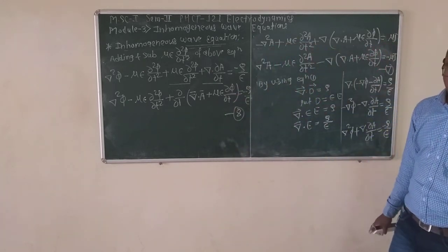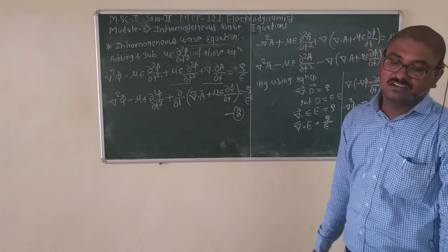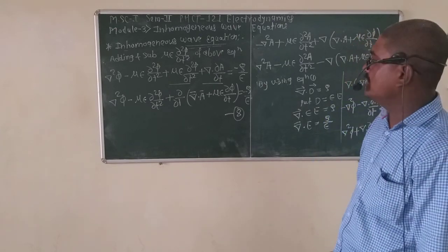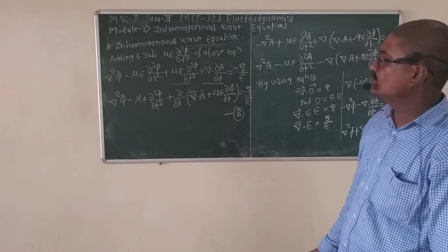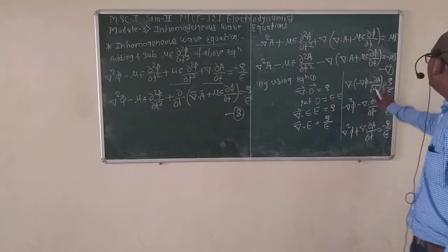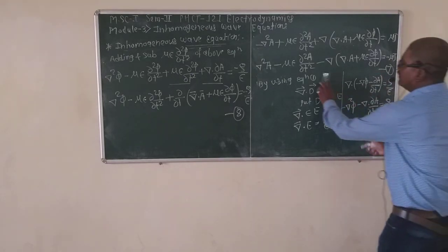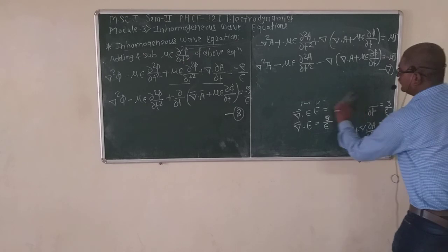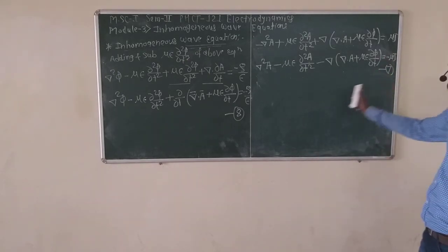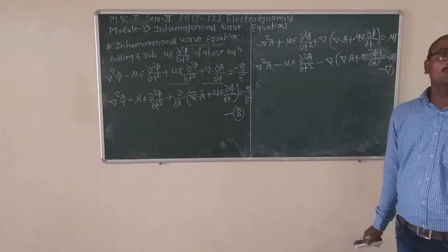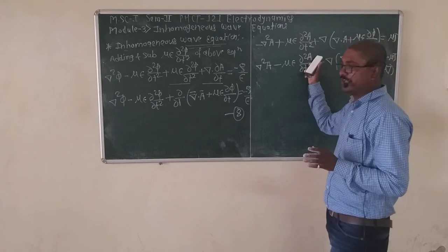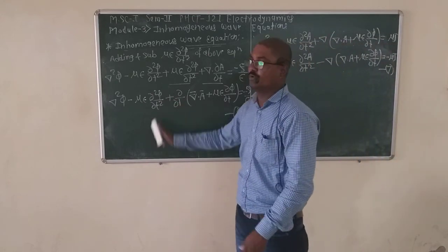After adding and subtracting mu*epsilon*(d²phi/dt²), equation 8 becomes: del squared phi minus mu*epsilon*(d²phi/dt²) plus (d/dt)(del dot A plus mu*epsilon*(d phi/dt)) equals minus rho/epsilon. This is equation 8, the second inhomogeneous wave equation in terms of scalar potential phi.